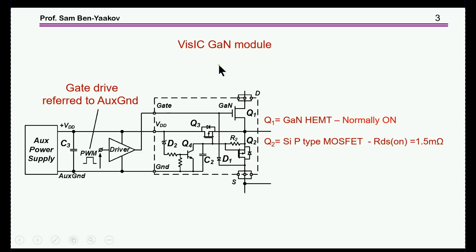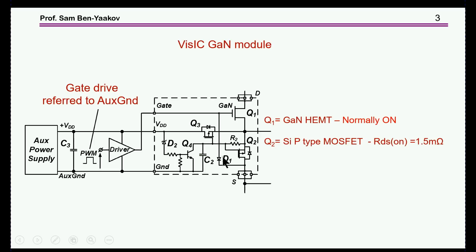The module of the GAN transistor manufactured by Vizik is shown here. This is the module and it is built around a GAN transistor which is normally on. The auxiliary circuit is used primarily to keep it normally off, so that from the outside the assembly looks like a normally-off assembly, and only when the auxiliary power supply is available will the unit respond to the regular PWM signal.